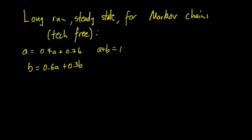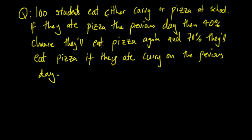It's easiest to explain this through an example. We'll do the example that we did previously as well. 100 students eat either curry or pizza at school. If they ate pizza the previous day then 40% chance they'll eat pizza again, and 70% they'll eat pizza if they ate curry on the previous day.